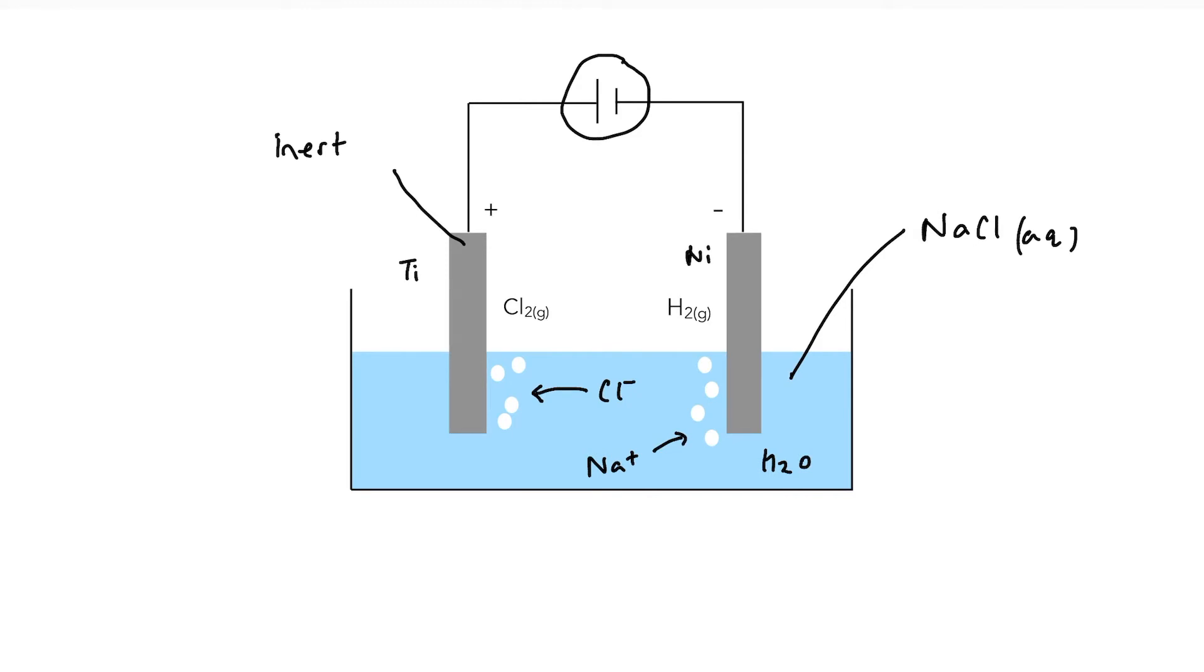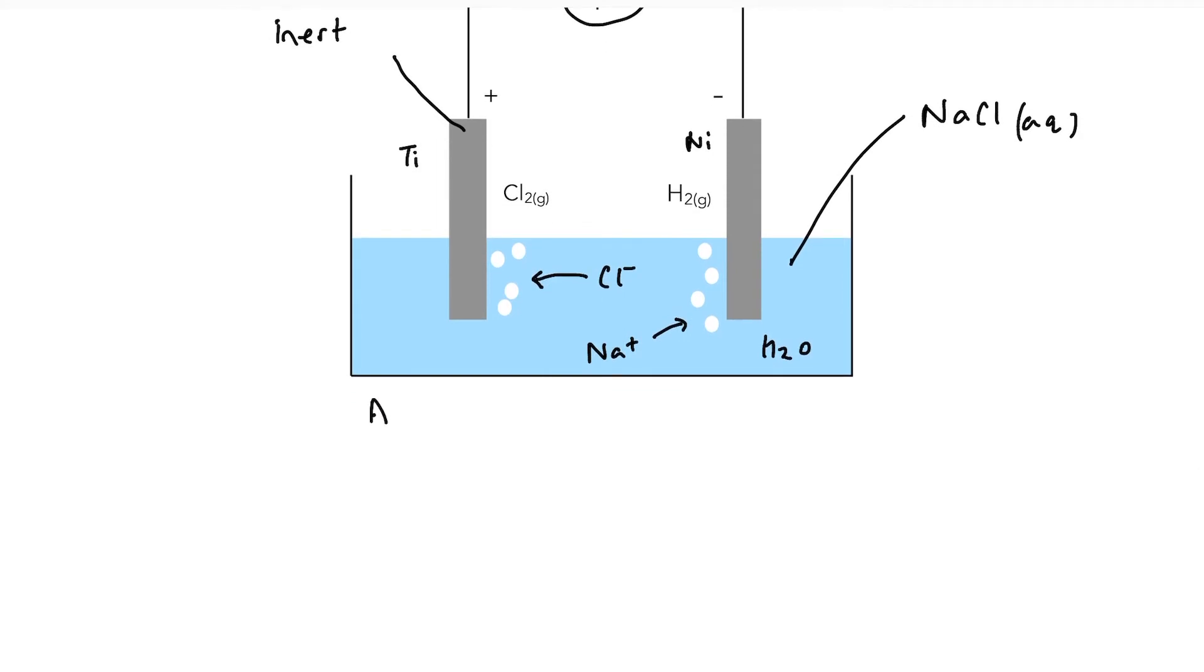So let's have a look at the actual reactions happening. So once again, at the anode, we know that we are looking at oxidation. So what are my possibilities? Either I can oxidize the chloride ions or I can oxidize water.